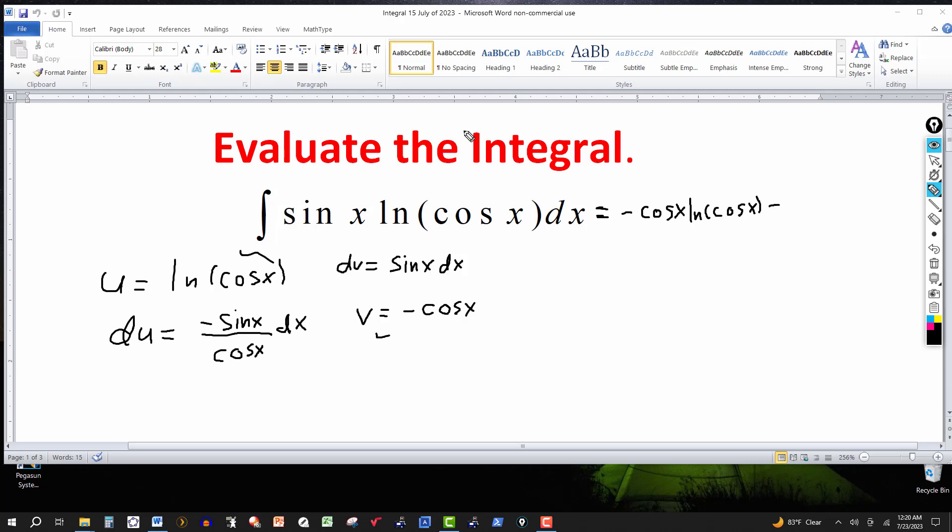And then it's minus the integral of v du. This would be v, which is minus cosine of x, and then du, which is minus sine of x over cosine of x, dx.